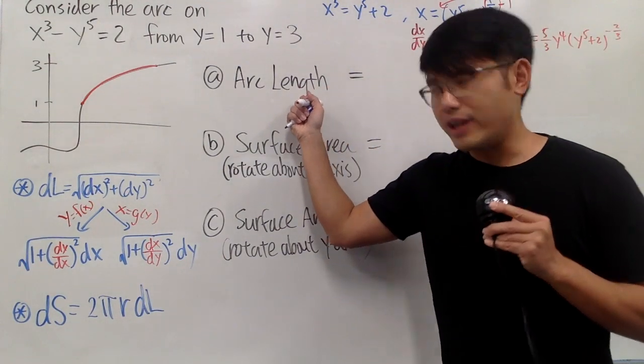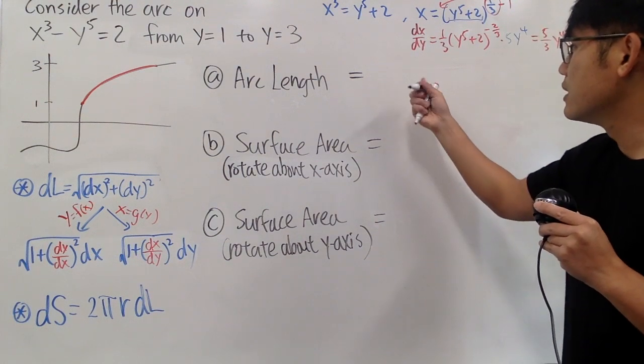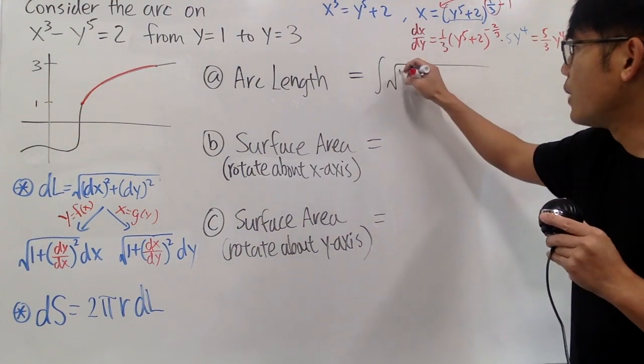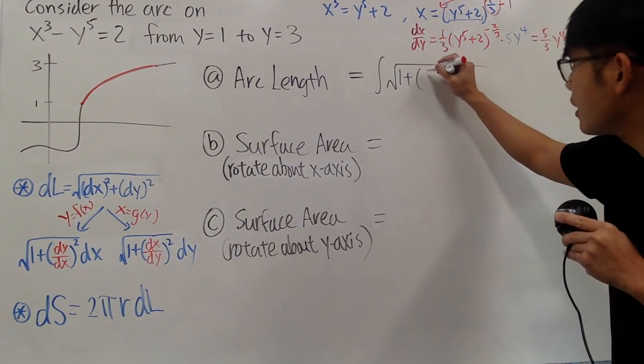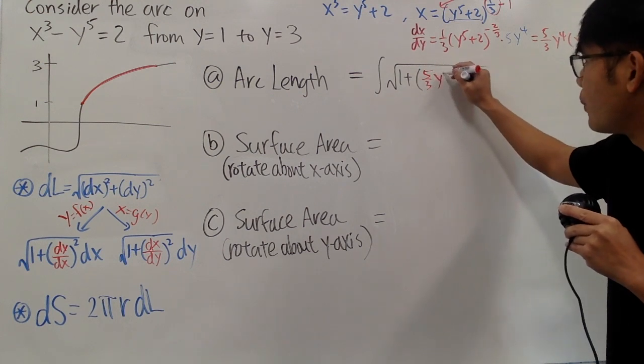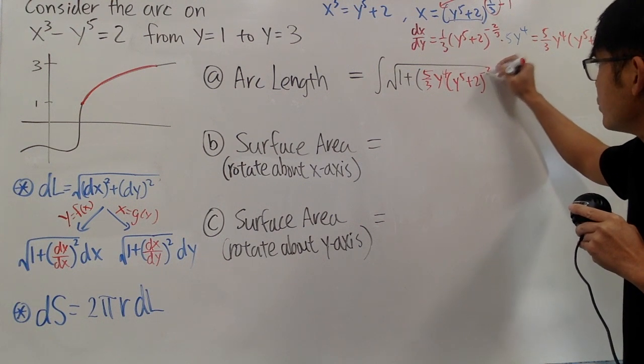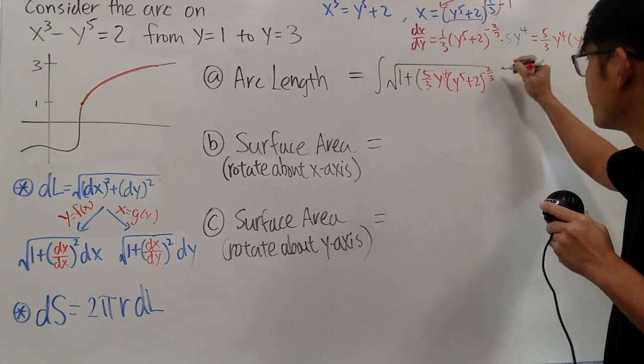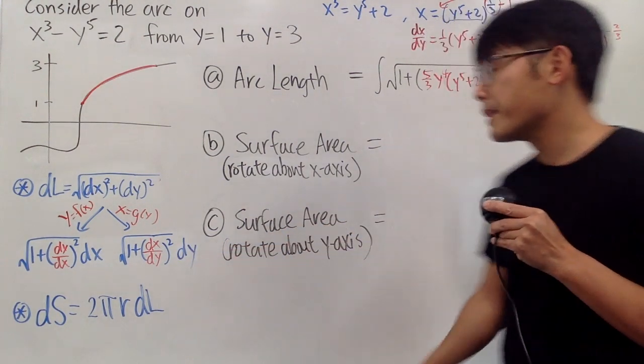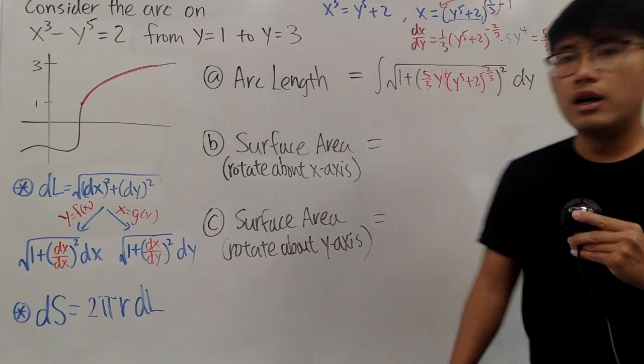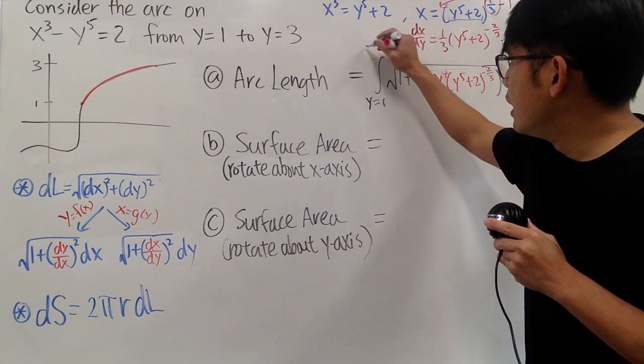Now, arc length in action. We'll be using this version, so here we go. We have to have the integral, of course. So integral, square root, 1 is the 1, and we add the parentheses. All that inside here, which is 5 third y to the fourth power times y to the fifth power plus 2 raised to the negative 2 third power. And this right here is the derivative. And we are just going to take this and raise to a second power because the formula says so. And we have the dy here, so we are in the y world. We have to go from 1 to 3.